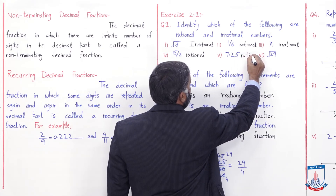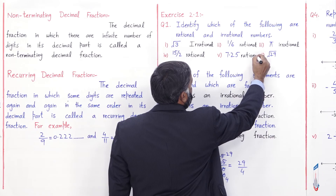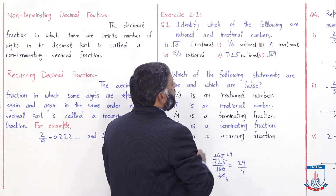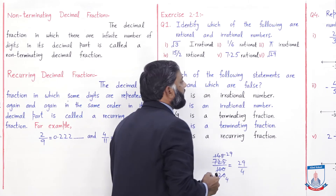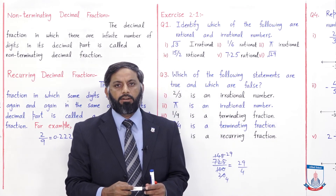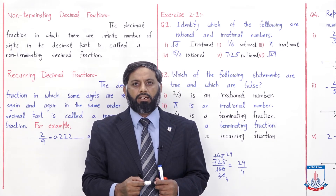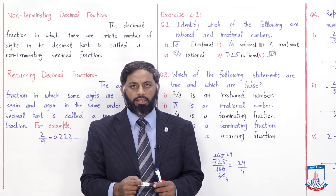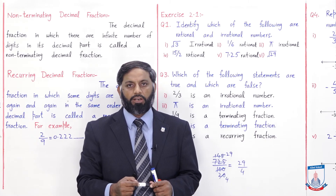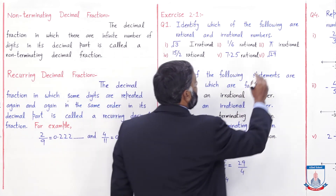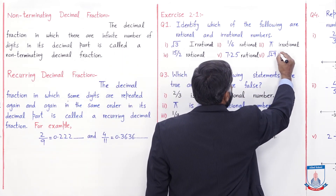√29 کو solve کریں تو remainder کبھی 0 نہیں آئے گا، decimal part میں digits infinite ہوں گے اور اسے p over q کی form میں نہیں لکھا جا سکتا۔ لہذا √29 بھی irrational number ہوگا۔